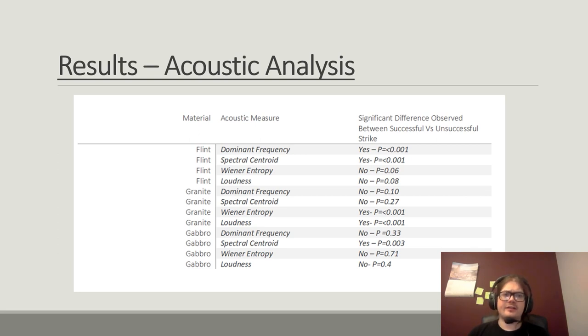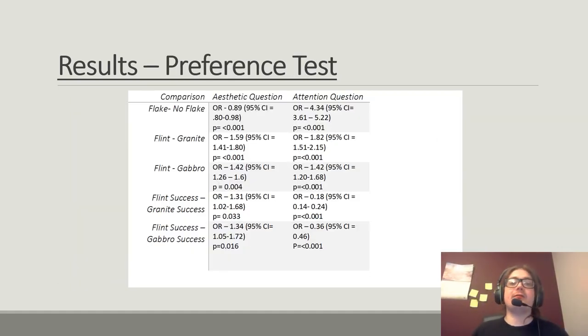Directly contrary to this, granitic gneiss shows no significant differences in the frequencies produced by percussion, but flake producing strikes are louder and clearer. This likely reflects differences in chemical and structural composition of this material in comparison to flint. Finally, the poorest material, gabbro, showed no differences among any of the acoustic properties except for spectral centroid frequency. This frequency was significantly higher among the successful strikes. Thus, the characteristic of successful strikes in this material is a somewhat more present and thwacky sound.